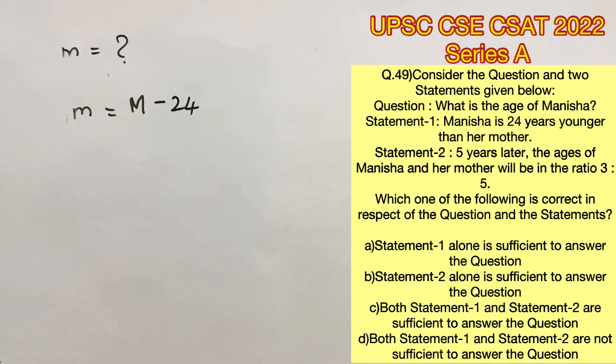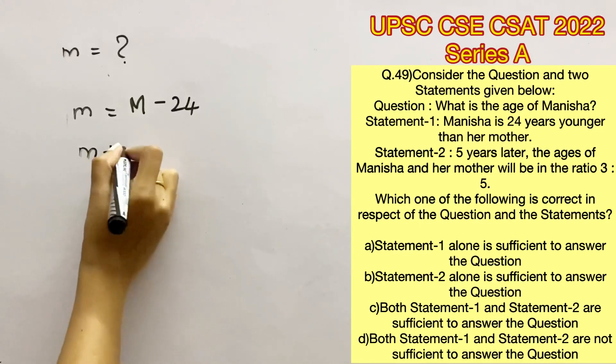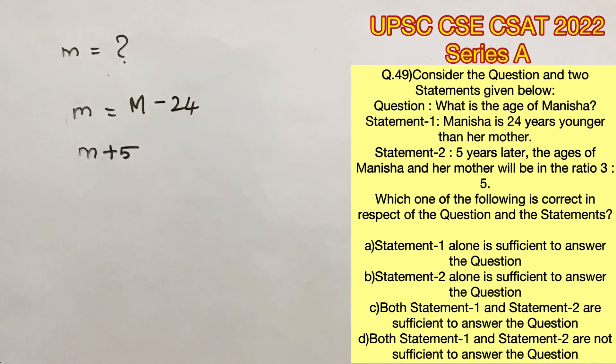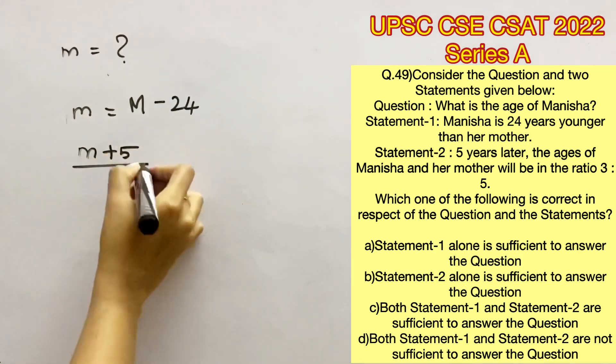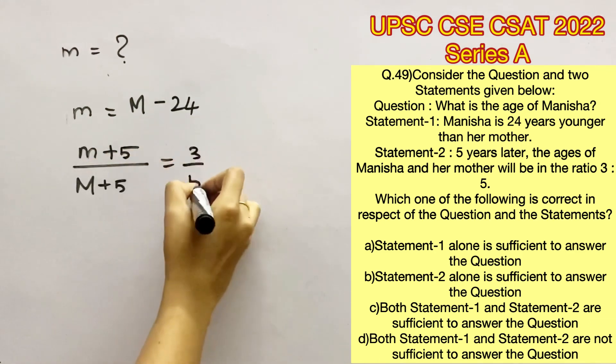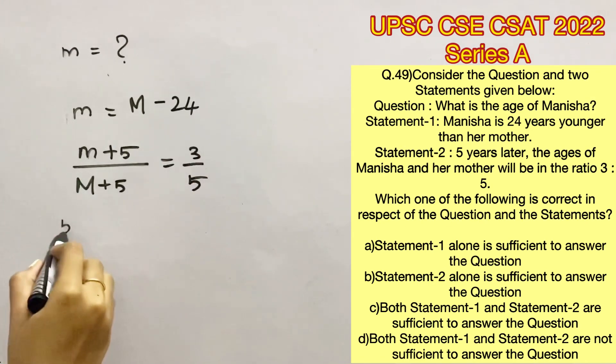So we are moving on to the second statement where 5 years later the ages of Manisha and her mother will be in the ratio 3 is to 5. So present age plus 5 divided by mother's age plus 5 equals 3 by 5 since ratio can be represented in form of fractions.